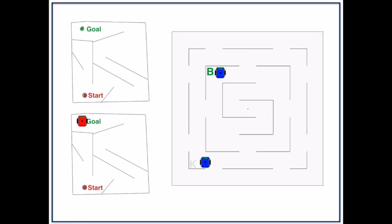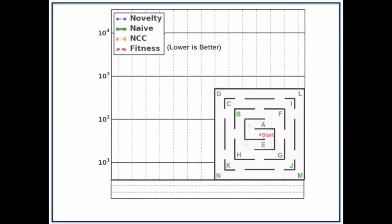We can have robots start in the center and record the number of evaluations it takes to get to different goal locations within the large maze. Now let's see what we get when we plot those results.